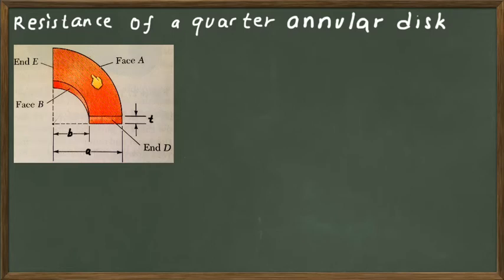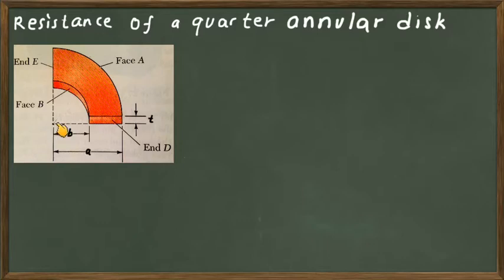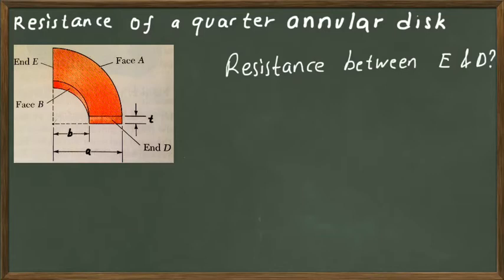Here we have a material which is in the shape of a quarter annular disc. Geometrically, this is one quarter of an annular conductor. It has an inner radius from the center to face B as small b, and from the center to face A it has radius small a.